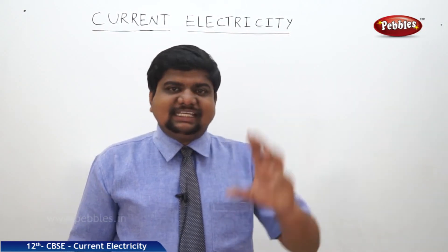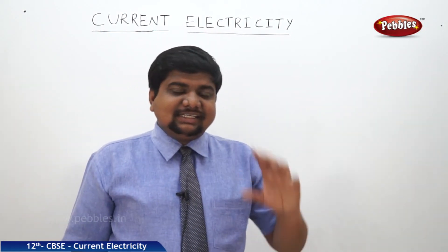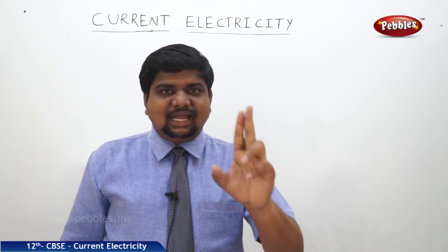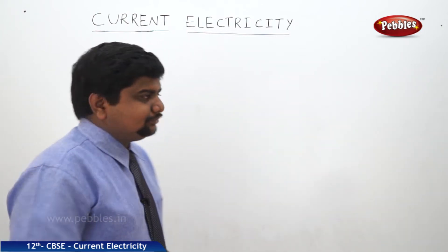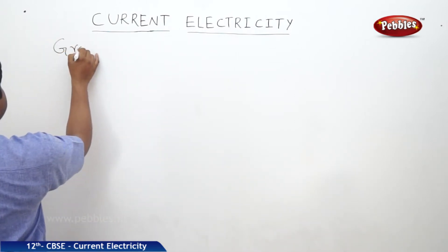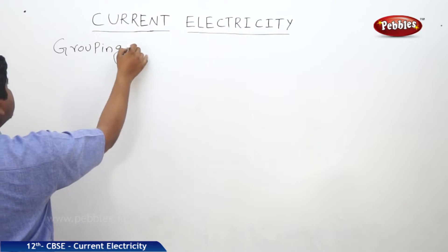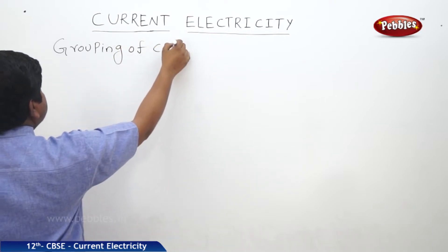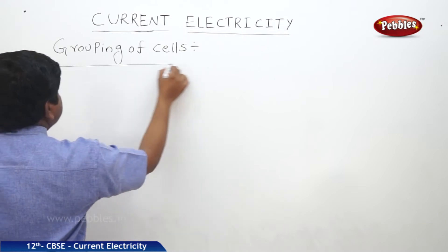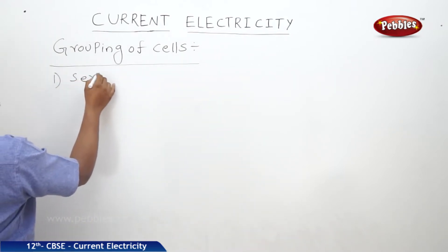Now we will see the grouping of cells in different ways. As like in the resistors, cells are also grouped in two ways: series and parallel. Grouping of cells. First one: series combination.